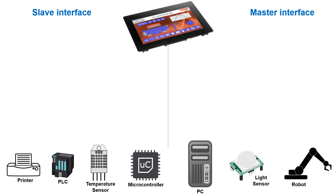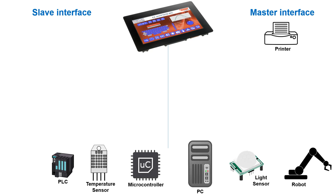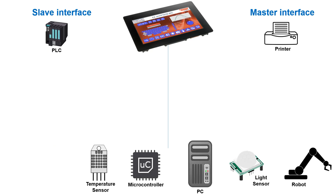If we want to connect a printer, it's pretty clear that the UniTFT is the master — the UniTFT has the data and sends it to the printer. To interface to a PLC, the UniTFT needs to be connected through the slave interface. The PLC is the master in the system, collects data from external sensors, and drives motors or something like that. The UniTFT is used as HMI to inform the operator or get information from him.